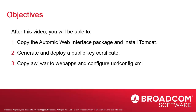Then we'll install the AWI Web Archive in Tomcat's webapps directory. If the web server is started, the WAR package is unarchived and expanded into a directory in AWI's file system. We'll be able to access uc4config.xml, AWI's configuration file. We'll set the system name, connection settings, and TLS settings. Finally, we start Tomcat, which starts AWI.